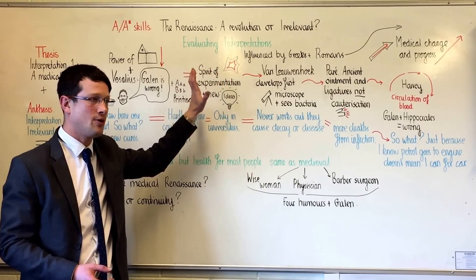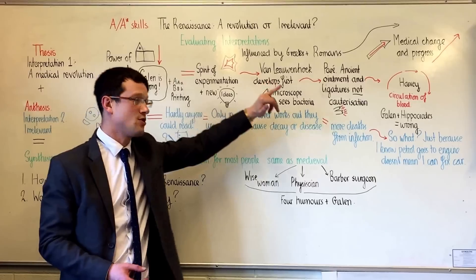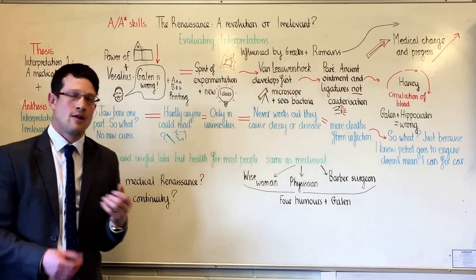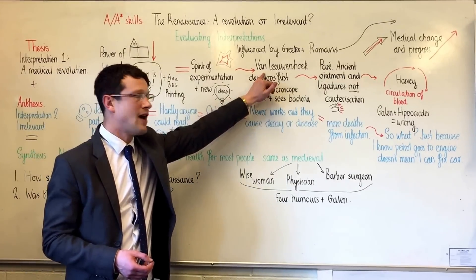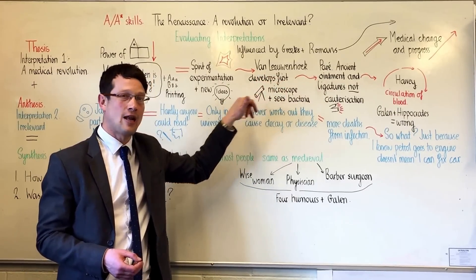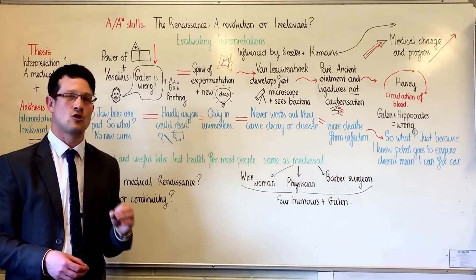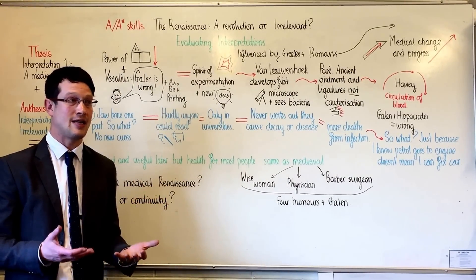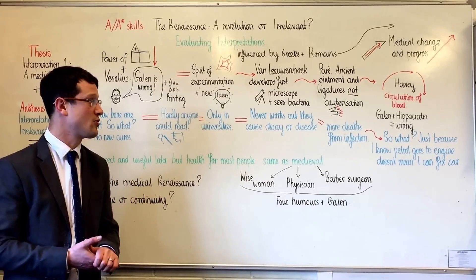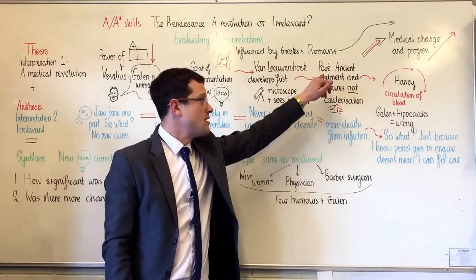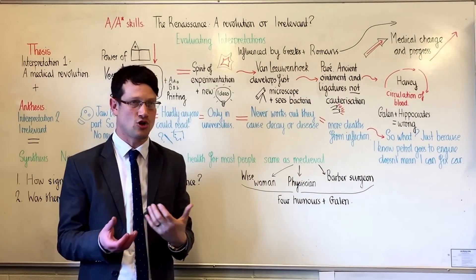This looking at the natural world was heavily influenced by the Greeks and Romans. The first example of an important new discovery was made by a man called van Leeuwenhoek, who developed the first microscope. Using that microscope, for the first time he saw the bacteria which caused disease and decay — before him, nobody had seen these creatures.